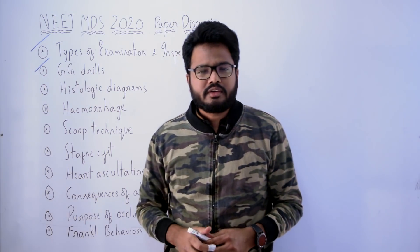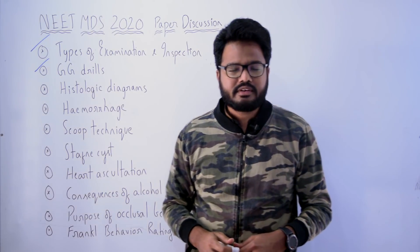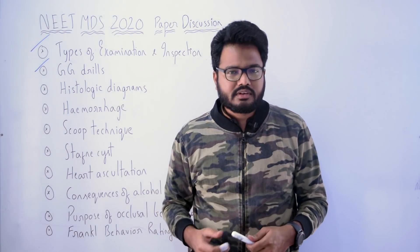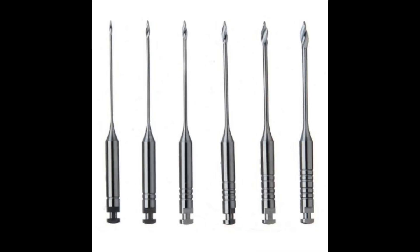Now let's move to the next question: GG drills. You can find some literature pertaining to GG drills, and we also discussed their sizes in one of the revision classes just before the exam. The Gates Glidden drill has a long thin shaft ending in a flame-shaped head with a safe tip to guard against perforations. The flame head cuts laterally and is used with gentle apically directed pressure. The long shaft is designed to break at the neck — the narrowest diameter that lies adjacent to the handpiece — so if the drill binds during use, it fractures at the neck of the shaft and extrudes from the tooth.